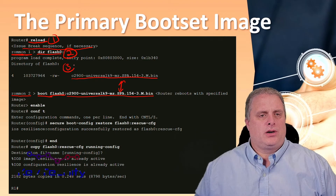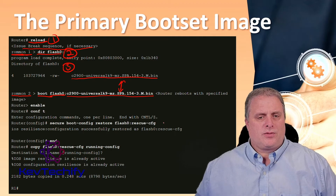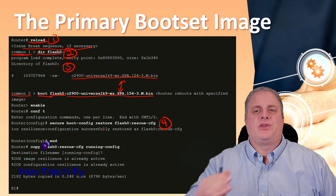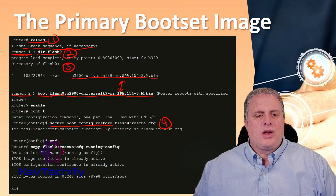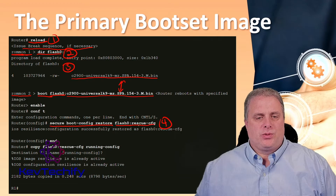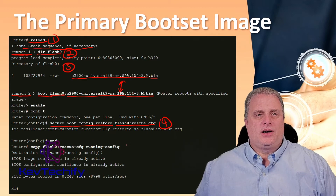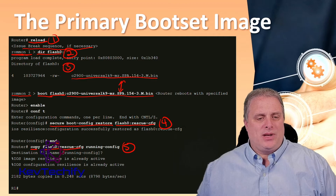Step four: log into your router and go into global configuration mode. Restore the secure configuration to a file name of your choice using the secure boot config restore command — for example, we chose rescue.cfg. Step five: exit global configuration mode and then issue the copy command. We're going to copy from flash — the file we named — to the running config.